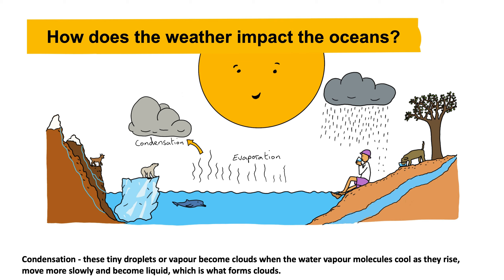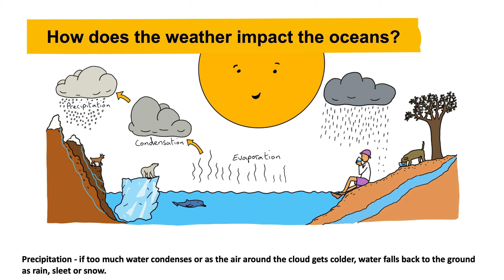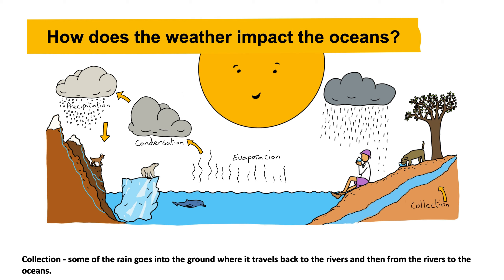Condensation: these tiny droplets of vapor become clouds when the water vapor molecules cool as they rise, move more slowly, and become liquid — which is what forms clouds. If too much water condenses, or as the air around the cloud gets colder, water falls back to the ground as rain, sleet, or snow. Some of the rain goes into the ground, where it travels back to the rivers and then from the rivers to the oceans.